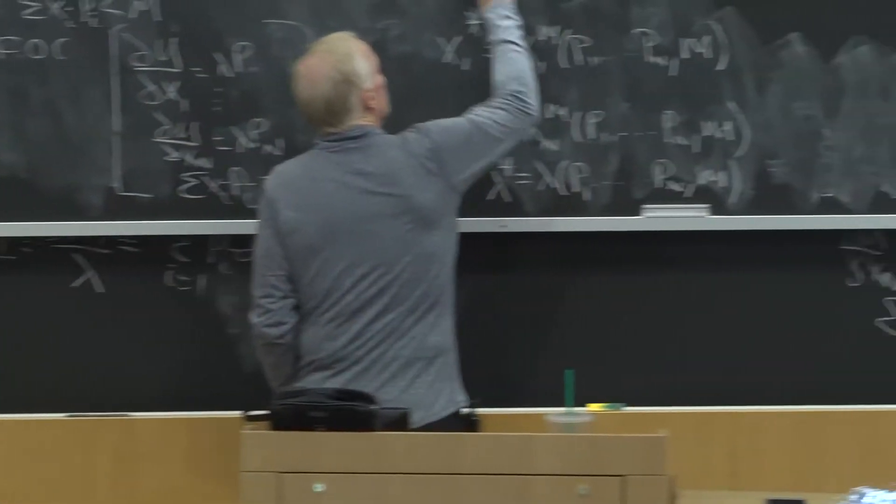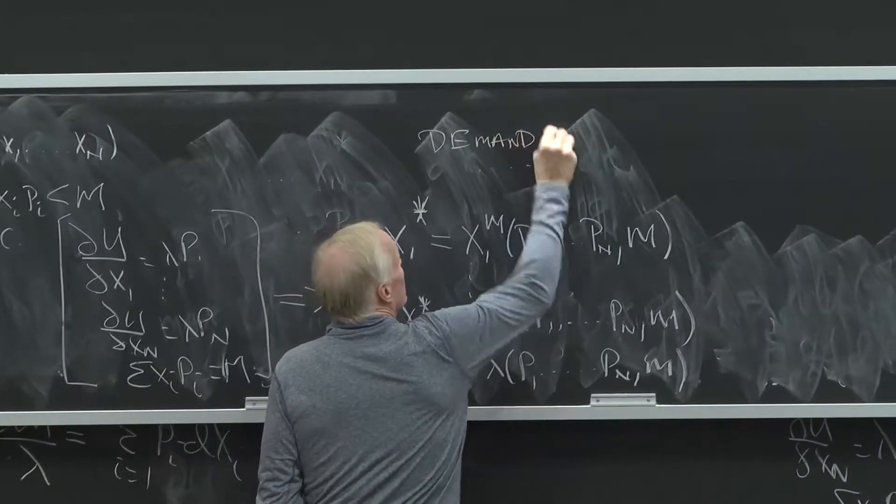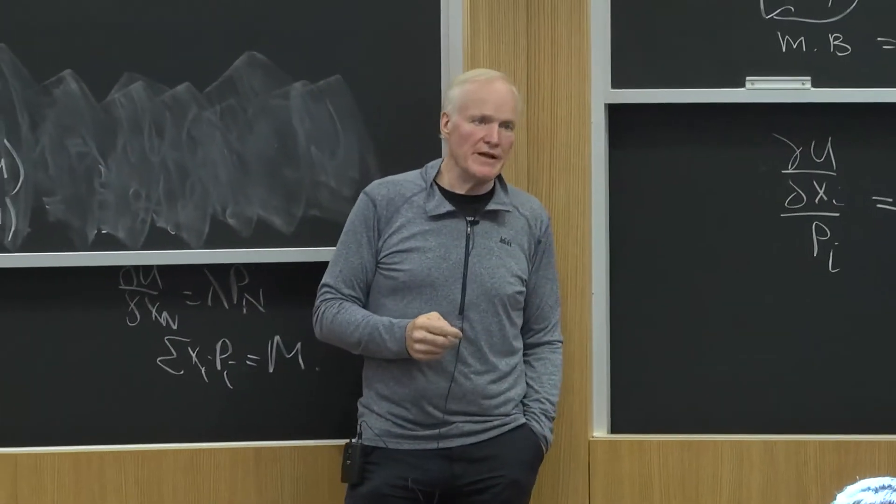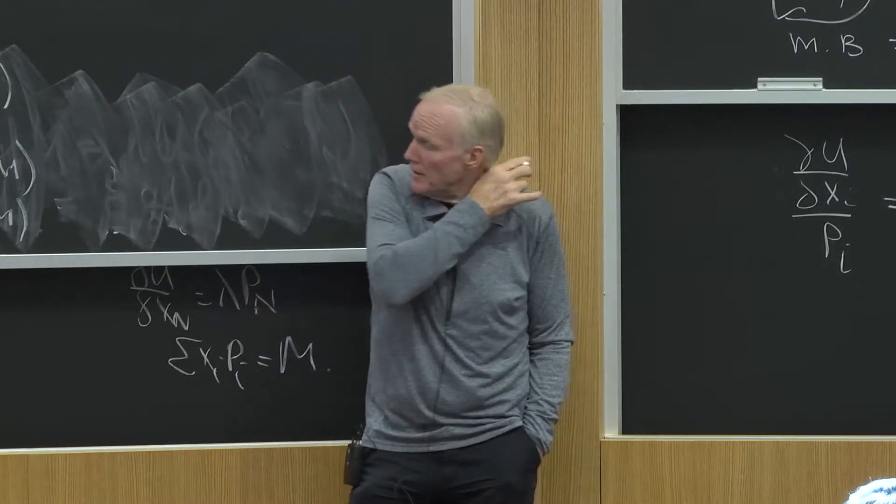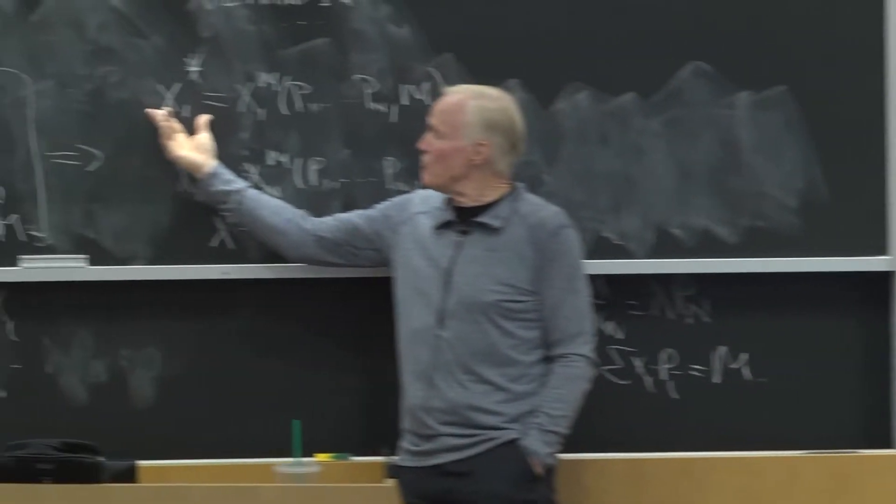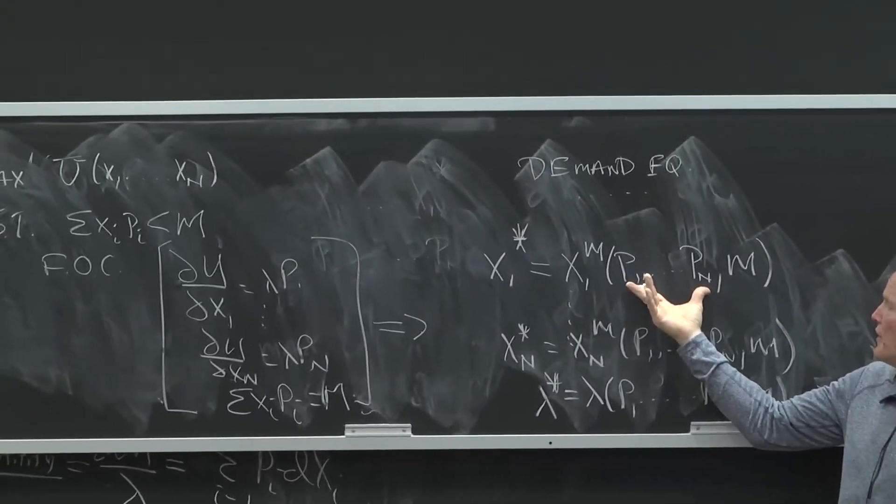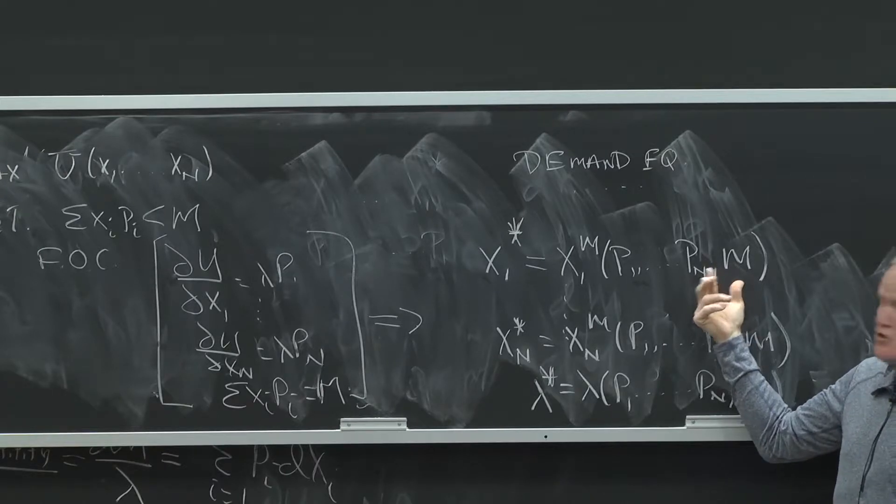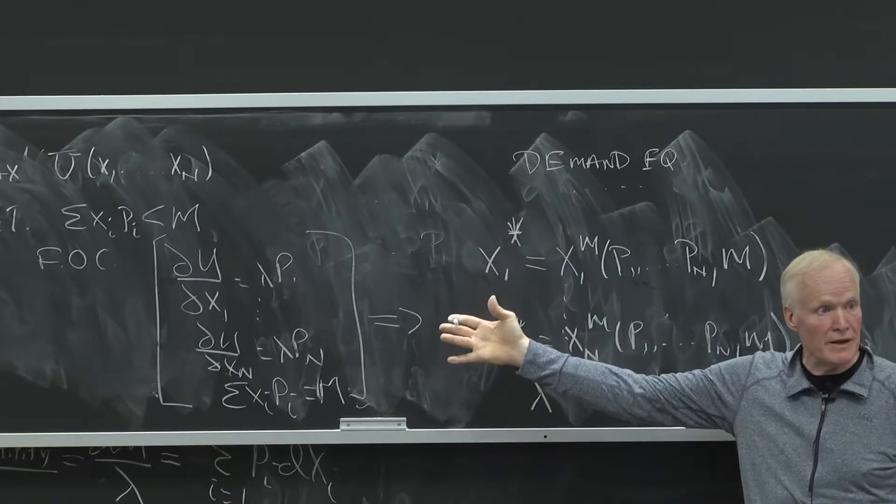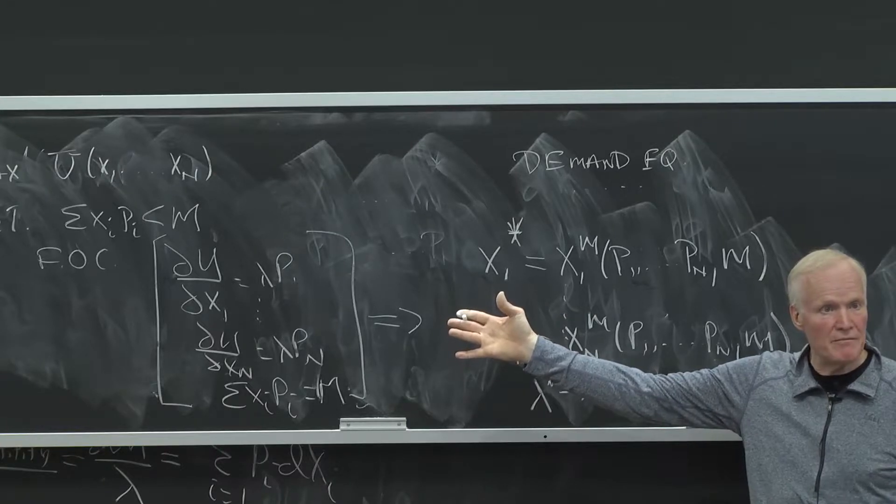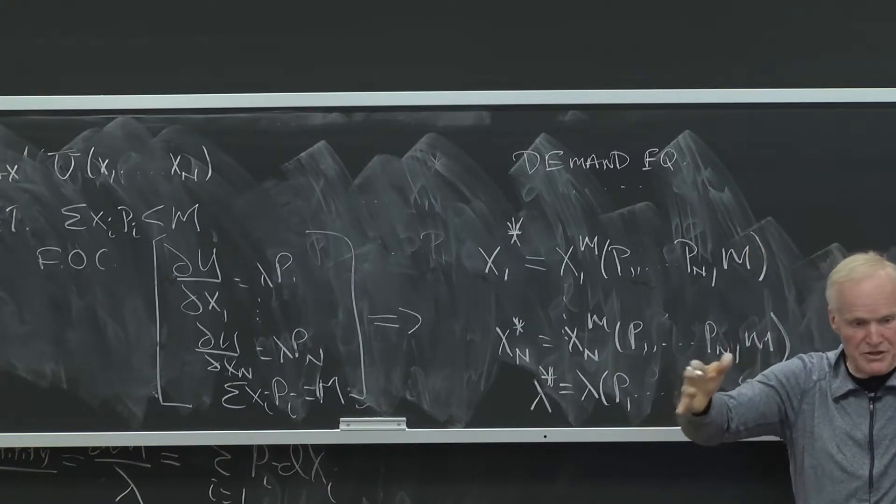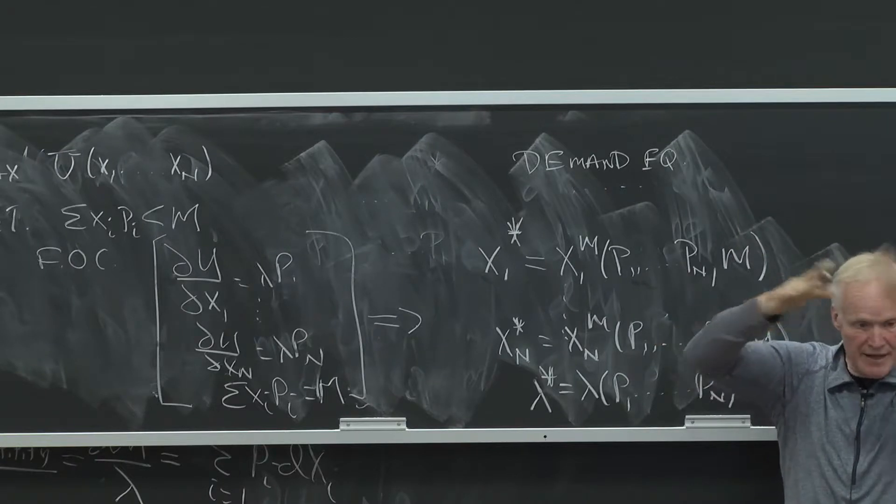This is what's called the demand equations. These are a particular type of demand equations called the Marshallian demand equations, named after the famous economist Alfred Marshall. The key thing about the Marshallian equations is that they tell me the optimal level of x1 as a function of the prices of goods 1 through n and income. You tell me the prices and income, and I'll tell you how much he consumes. It's a summary of this maximization problem. You have this maximization problem - give me the prices and income, that gives me the budget constraint. I combine that with the utility function, and that gives me the demand equations.